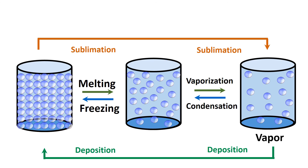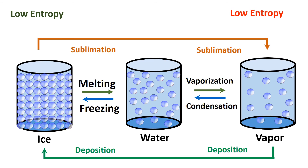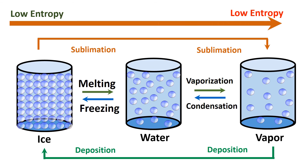Consider vapor, which has high entropy. If we want to condense water vapor to liquid, we need to remove energy since liquid water contains lower entropy. Again, if we want to freeze liquid water, we need to remove energy further since ice is a lower entropy state. We can observe that the lower the entropy, the higher the order of molecules. Thank you for watching this video until the end and supporting my channel.